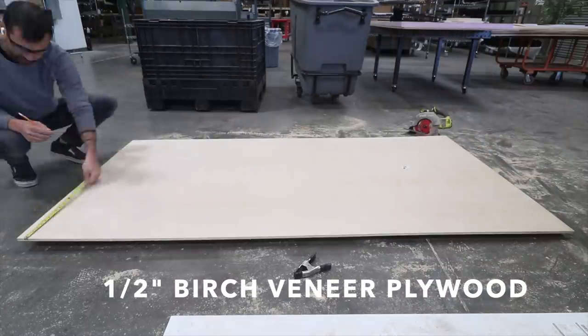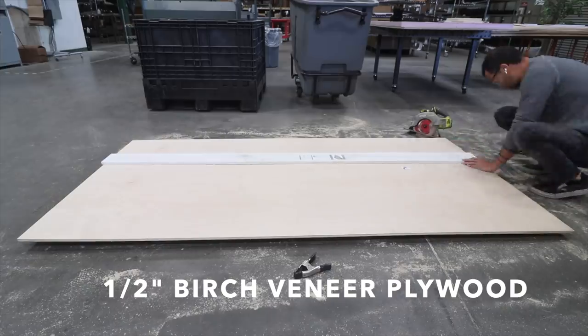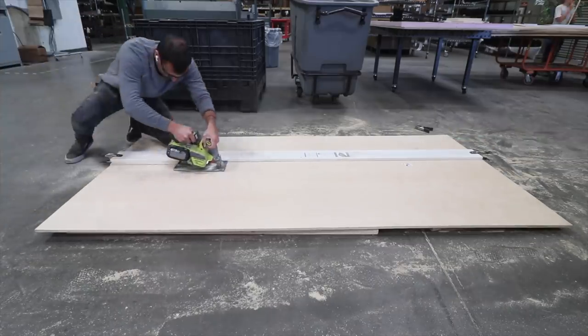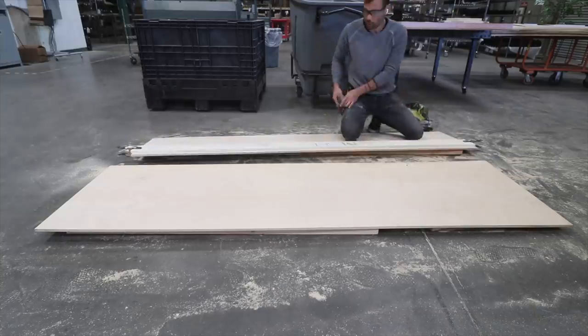I wanted to create a sturdy backer panel for the mirror, but I don't need all the weight and expense of 3 quarter inch thick plywood, so for this I just went with half-inch.